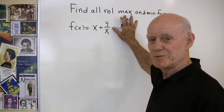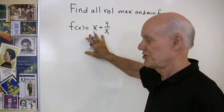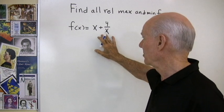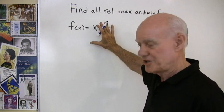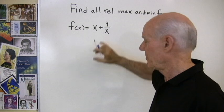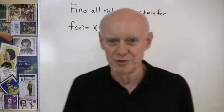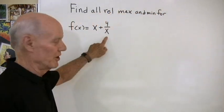I want to find all the relative maxima and minima for this function, f of x equals x plus 4 over x. It's a continuous function everywhere except where it's undefined, which is at x equals 0, because I can't have 0 in the denominator.